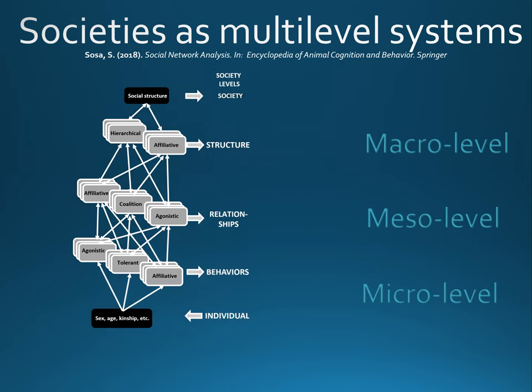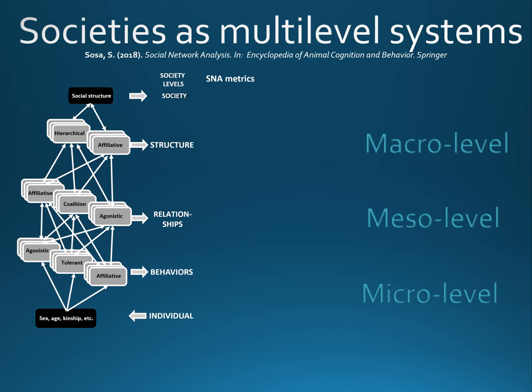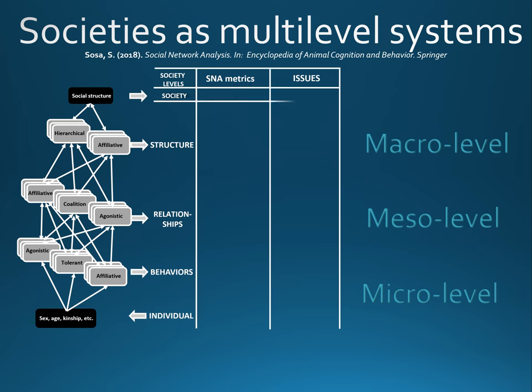If we now make the parallel between the social network analysis tools and those different levels, we can see how these new analytical techniques can highlight new phenomena in animal societies. For example, for the first level, by using node metrics, we can highlight the individual position and role within the network.